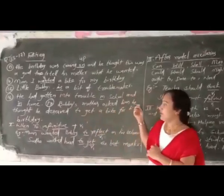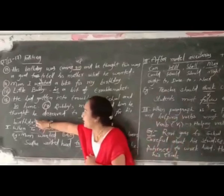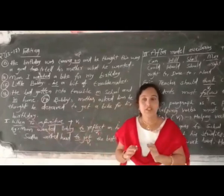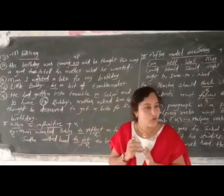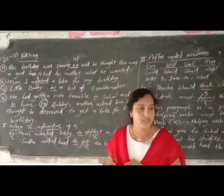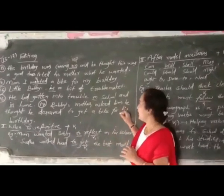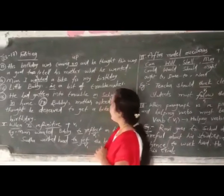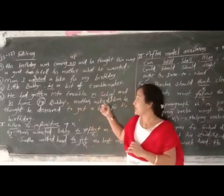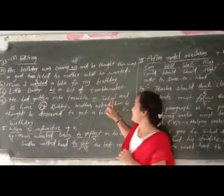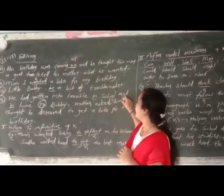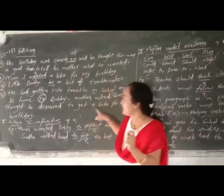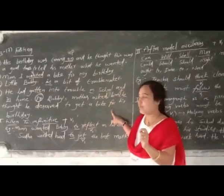Bobby's mother asked him — he thought he deserved to get a bike for his birthday. Whenever we ask a question in indirect speech, we must add the conjunction 'if.' So: 'Bobby's mother asked him if he thought he deserved to get a bike for his birthday.'